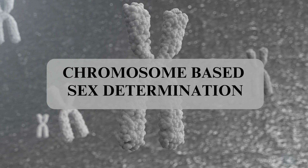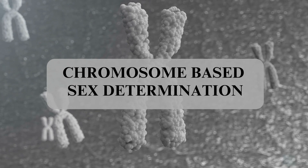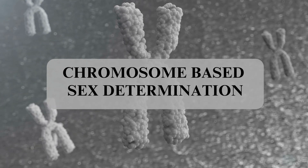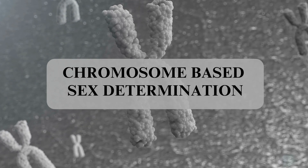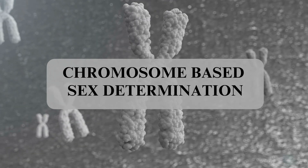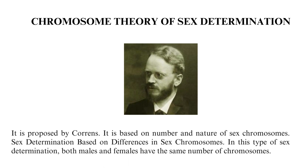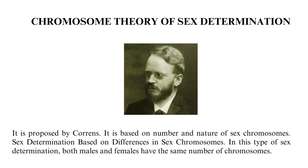In today's video we shall discuss about the Chromosome Theory of Sex Determination. This theory is proposed by Correns and is based on the number and nature of sex chromosomes. It is the sex determination based on differences in sex chromosomes.